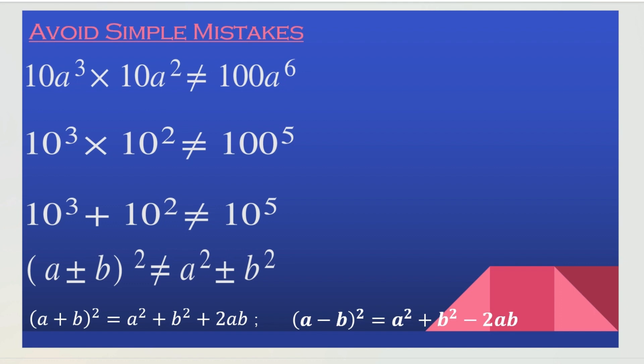Here we are going to discuss a few simple mistakes that many people often do. In the first one, 10 is going to be the coefficient, a is the base, and 3 is the exponent.